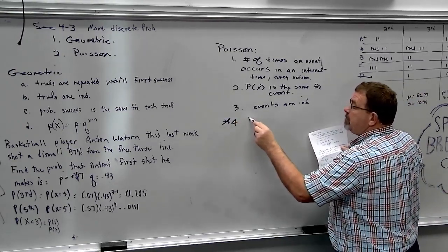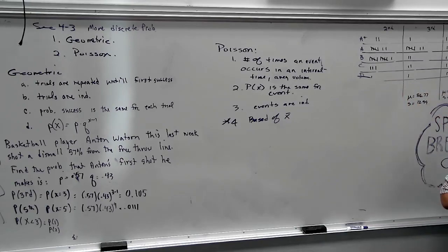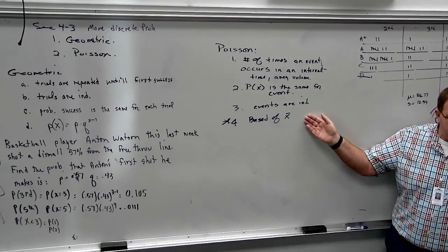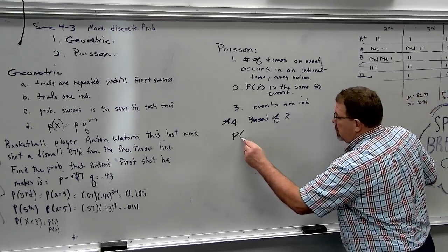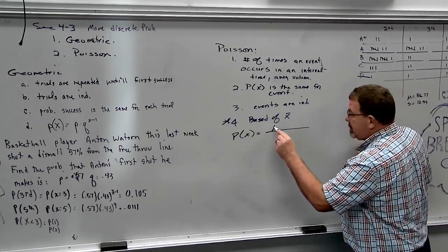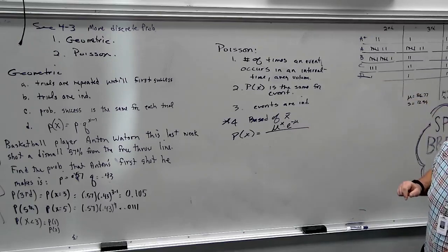But here's the formula. This is the key. It's based off of a mean. I'll just say x bar. So, this is the only formula we have in this chapter in which you're given the mean. So, when you're reading a word problem and it says the average number of accidents per intersection is this, you know it's this formula. Because it's the mean. No other formula has the mean in it.